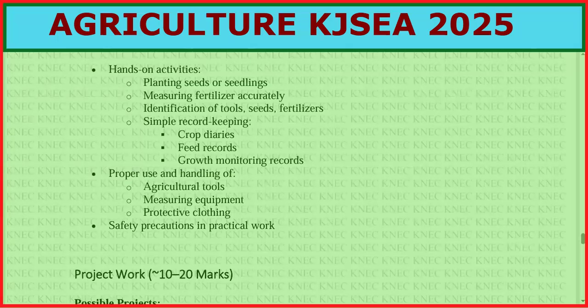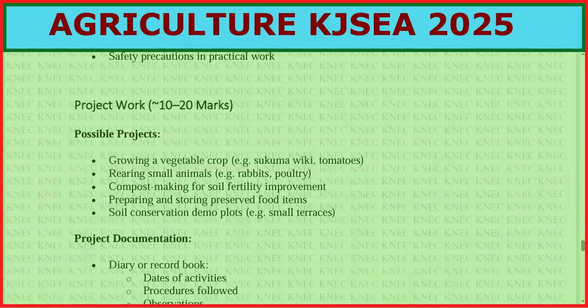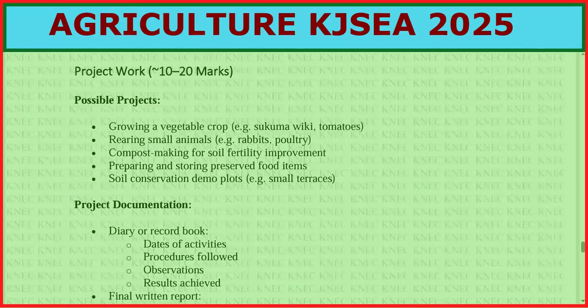For the project component, possible projects include growing a vegetable crop — like tomatoes — which was part of your assessment, rearing small animals, and compost making, each carrying 10 to 20 marks. Also included is preparing and storing preserved food items and soil conservation demo plots.